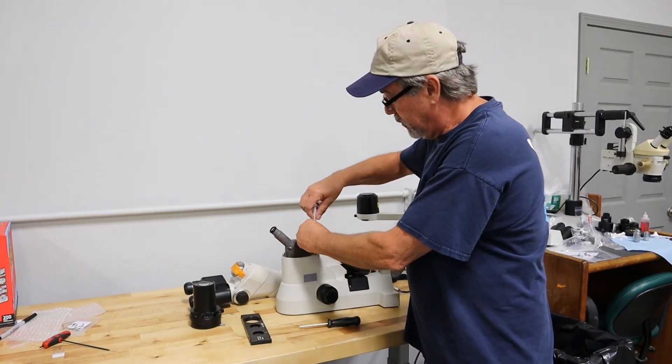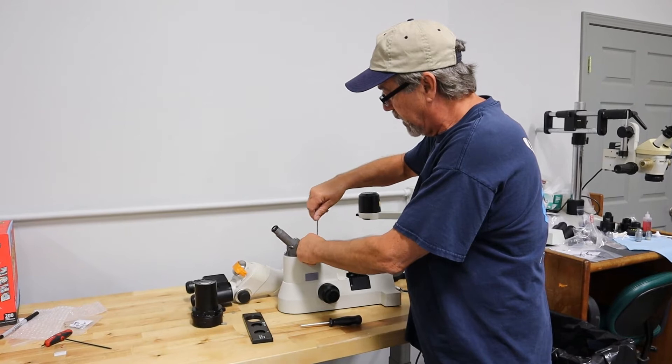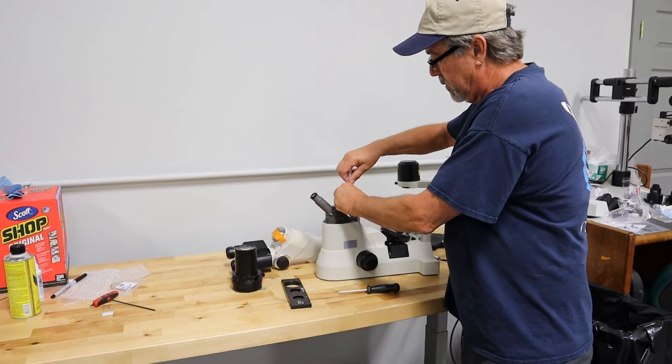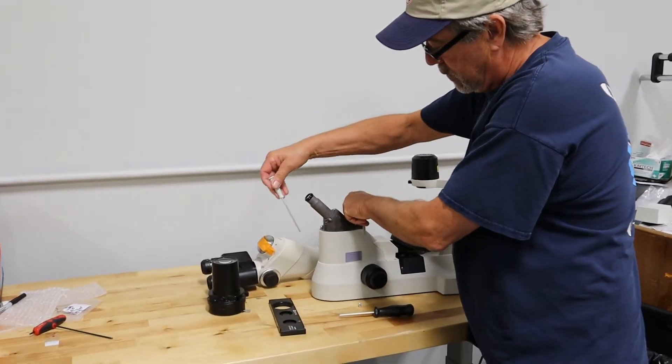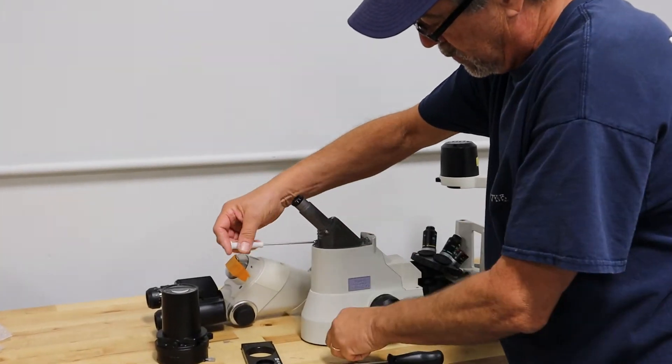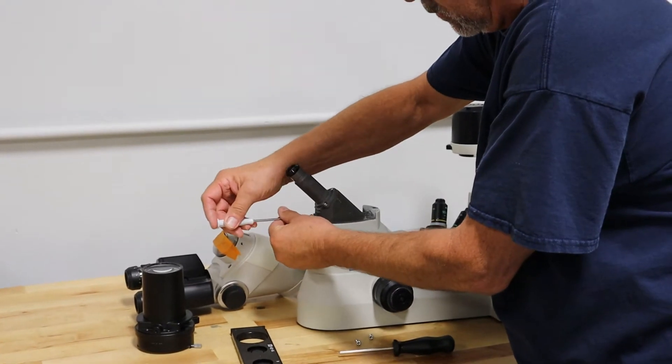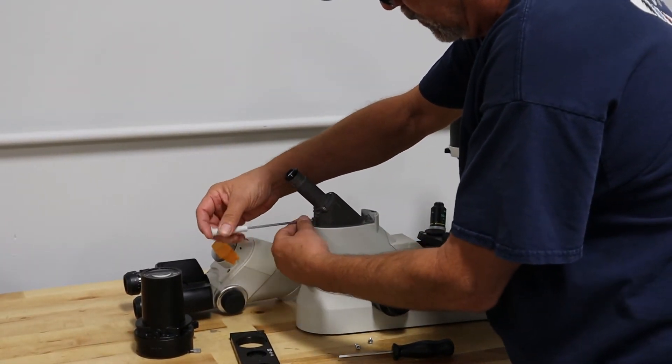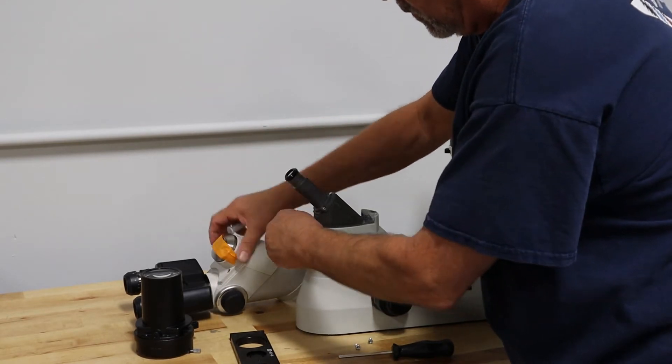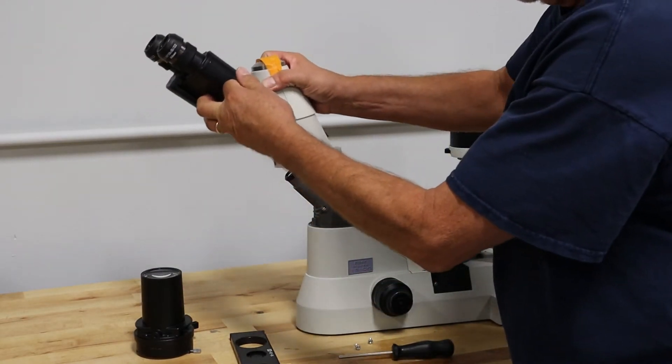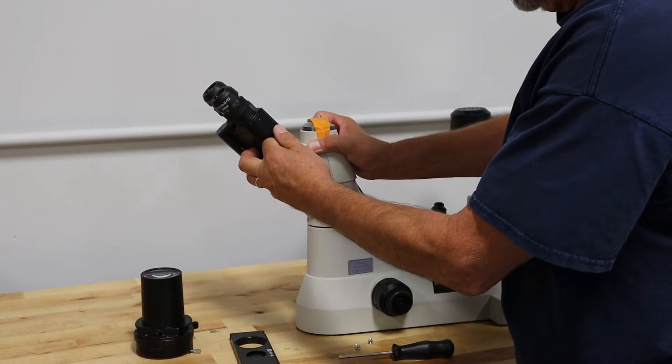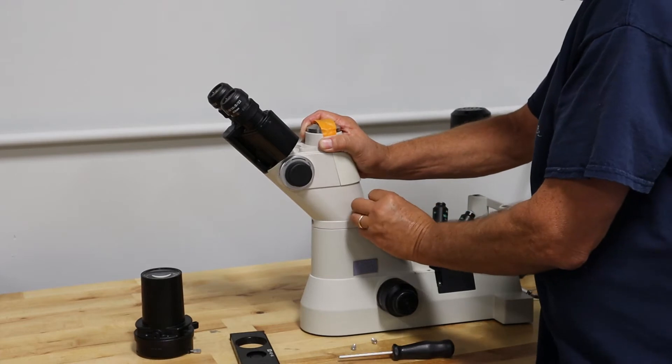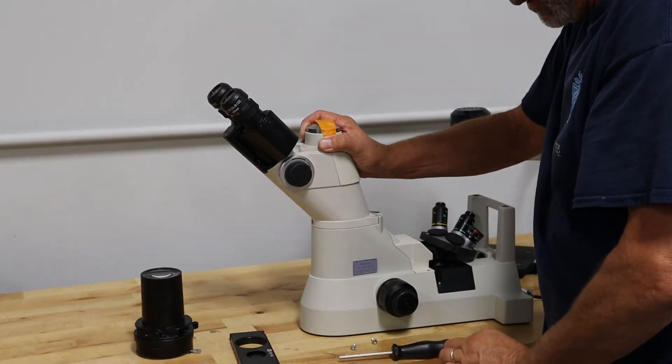Three millimeter screws hold the trinocular or binocular head on. It's pinned in place, so you can't mess it up.